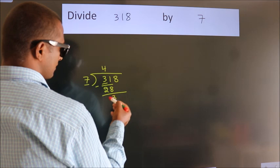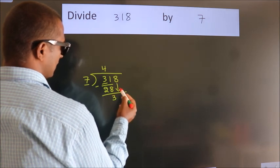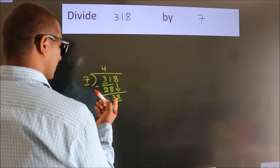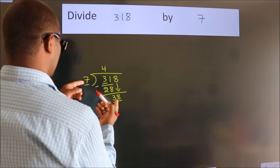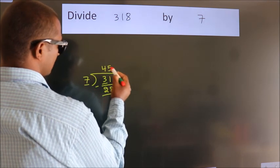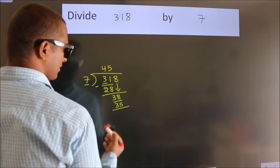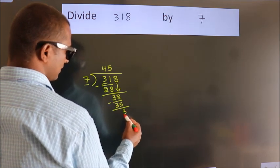After this, bring down the beside number. So 8 down. So 38. A number close to 38 in the 7 table is 7 times 5, 35. Now we subtract. We get 3.